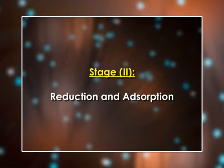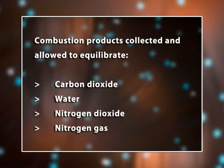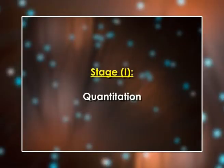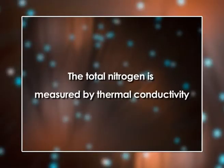Second stage — reduction and adsorption: the combustion products, mainly carbon dioxide, water, nitrogen dioxide and nitrogen gas, are collected and allowed to equilibrate. An aliquot of the gas mixture is passed over hot copper to remove any oxygen and catalytically convert nitrogen dioxide to nitrogen. The sample is then passed through a trap that removes carbon dioxide and water. Third stage — quantitation: the total nitrogen is measured by thermal conductivity.